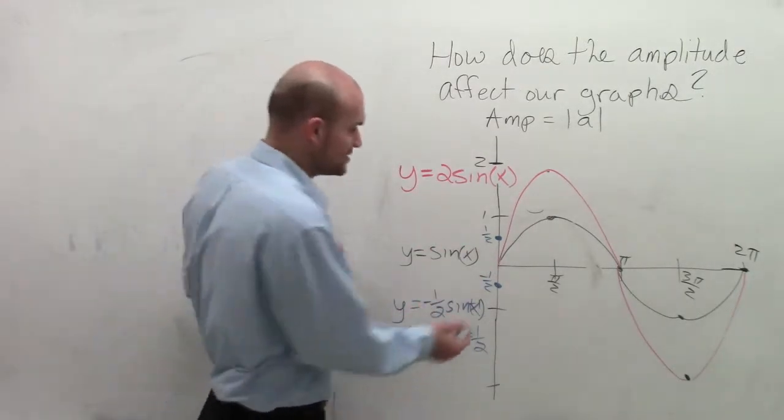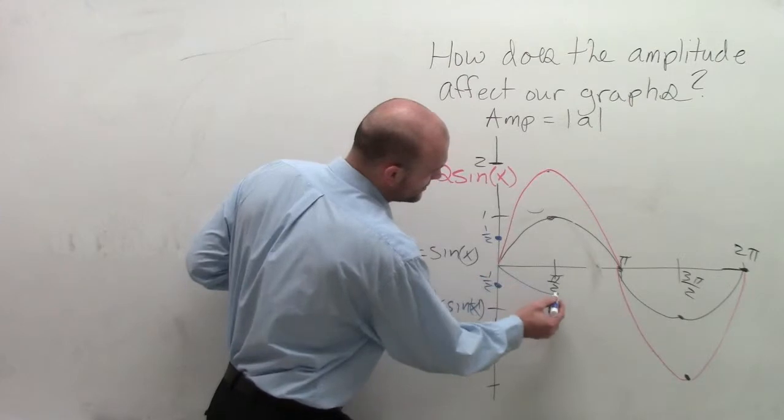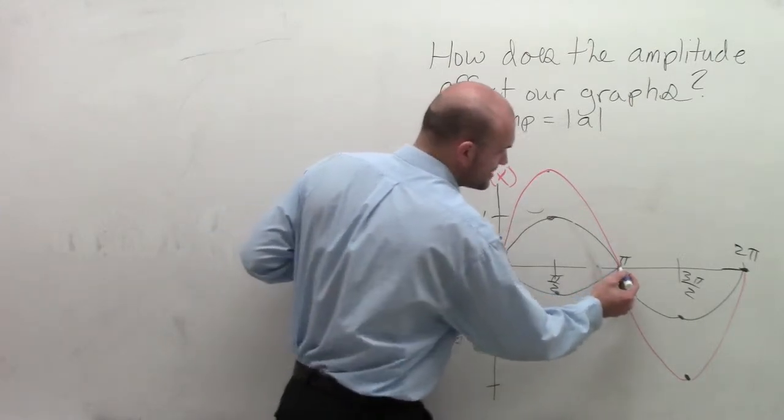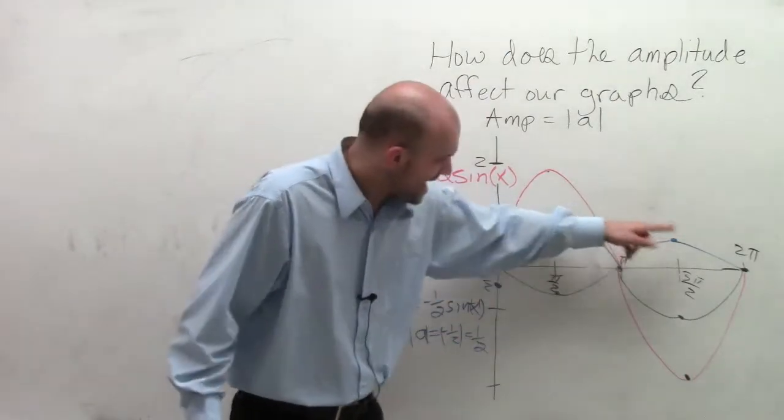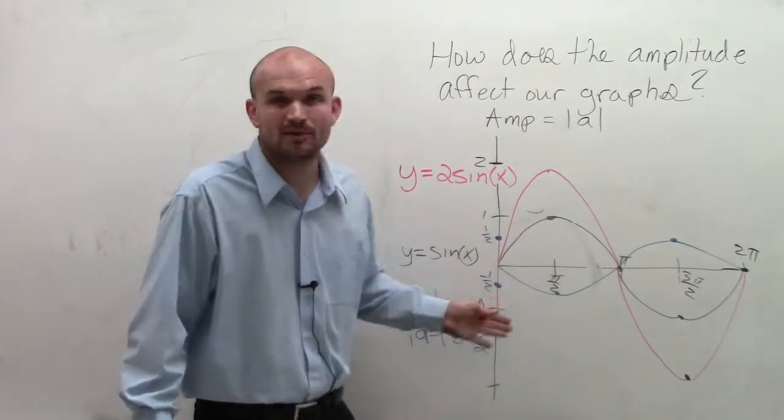Now, since this has a reflection, that means now my graph is going to go negative, still going to cross at the same point, positive, and cross over. But you can notice the distance between the maximum and the minimum point is still 1/2.